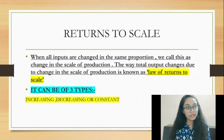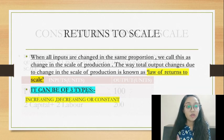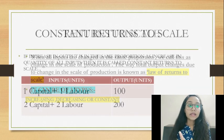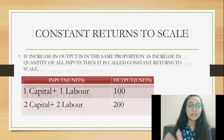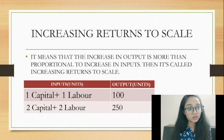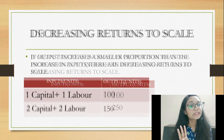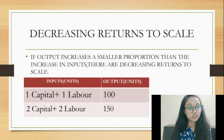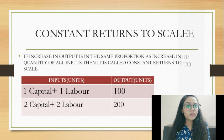Returns to scale can be divided into three categories: the first is constant returns to scale, the second is increasing returns to scale, and the third is decreasing returns to scale.